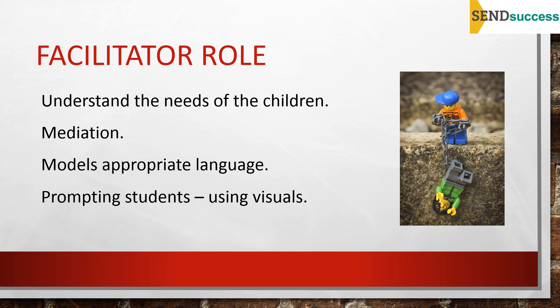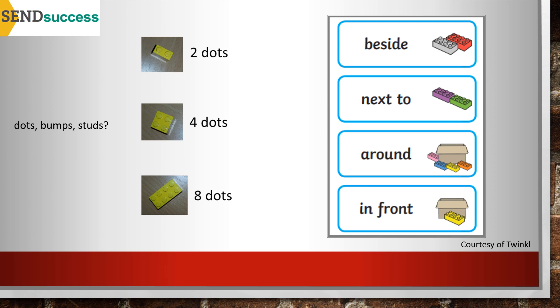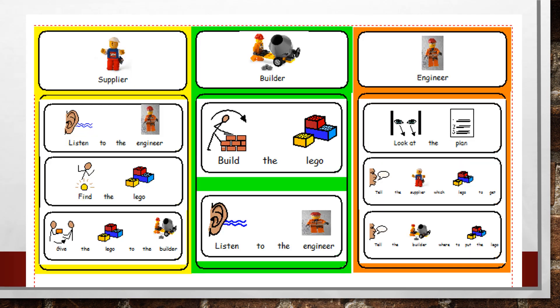Students may not realise that others don't have the instruction cards and therefore don't know whether they've got the next step right, so modelling and prompting — saying things like 'well done, that's right' — is helpful. Students don't always know how to get clarification either, so prompting and modelling phrases like 'is that right?' or 'is it the brick with two dots or four dots?' is valuable. Visuals really help with prompting students to develop the correct language. The visual on the left shows you agreeing as a group what you're going to call the little studs or bumps or dots on the Lego pieces, ensuring everyone uses the same language, while the one on the right helps with positional language.